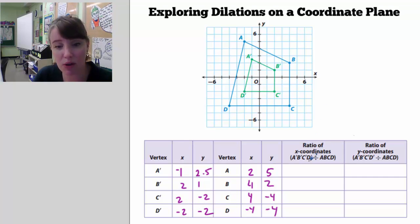So they want us to find the ratio of the prime coordinates to those of A, B, C, D. So if I take this, the x coordinate would be negative 1 over negative 2, so the ratio ends up being 0.5 or positive one half.